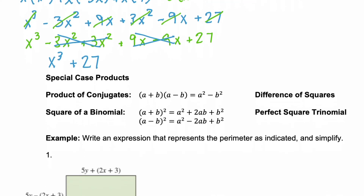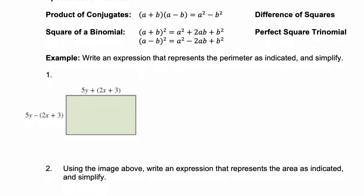Before we get into this visual problem, we want to review these special case products. The first is called the product of conjugates, or the difference of squares. When you multiply conjugates, the first term of each binomial is the same and the second term is the same, but one is positive and the other is negative. You multiply conjugates and you end up with a difference of squares: the first thing squared minus the second thing squared. Next, if you take a binomial and square it — whether it's a positive or negative binomial — you end up with a perfect square trinomial.